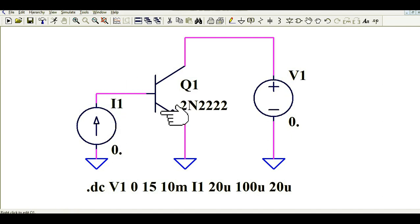This is about the base and you can see the emitter is connected to the ground and the collector is connected via a voltage source V1 and the value of V1 is 0 to 15 volt in the step of 10 millivolt.